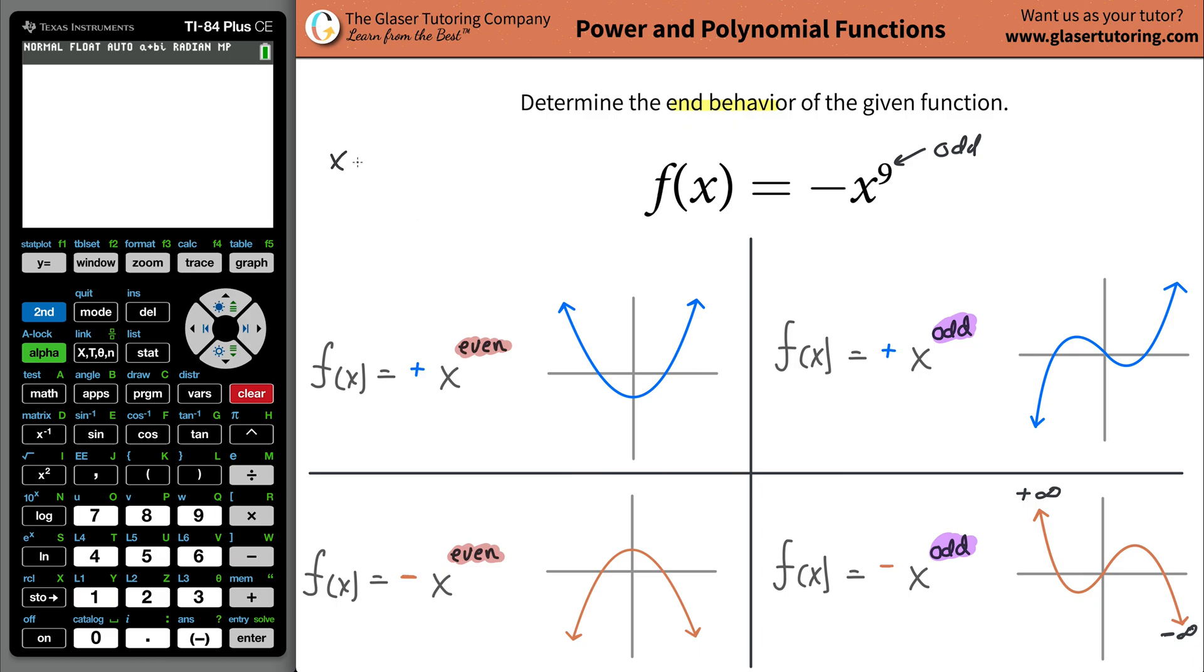In other words, as x goes to, let's do negative infinity first. As x approaches negative infinity, y will go, or f(x), you can write instead of y, f(x), they mean the same thing, but f(x) will go to positive infinity. And as x goes to positive infinity, the function's value here will go to negative infinity. That could be considered the answer. You're now describing the end behavior of the graph, or of the function.